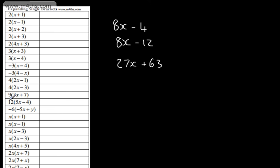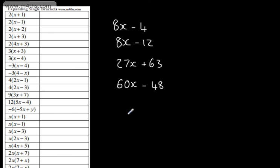This one just here: we've got 12 lots of 5x. 12 times by 5 is 60, multiplied by x is 60x. 12 times by 4 is going to give us 48, and we need to subtract that. So that's going to give us minus 48.